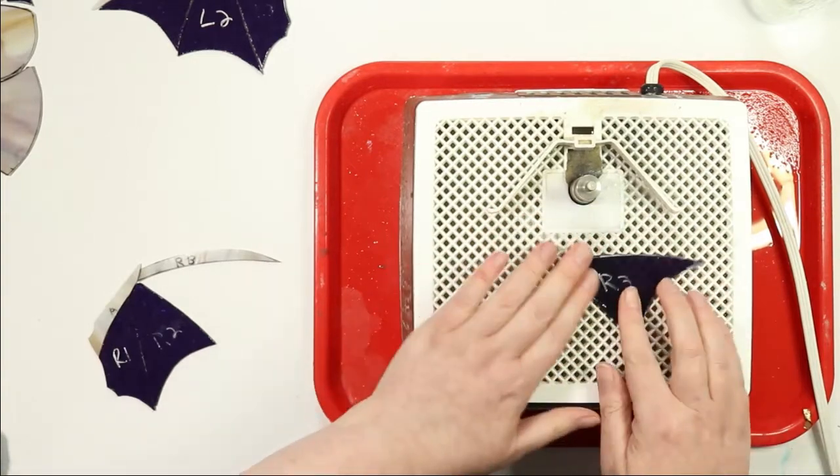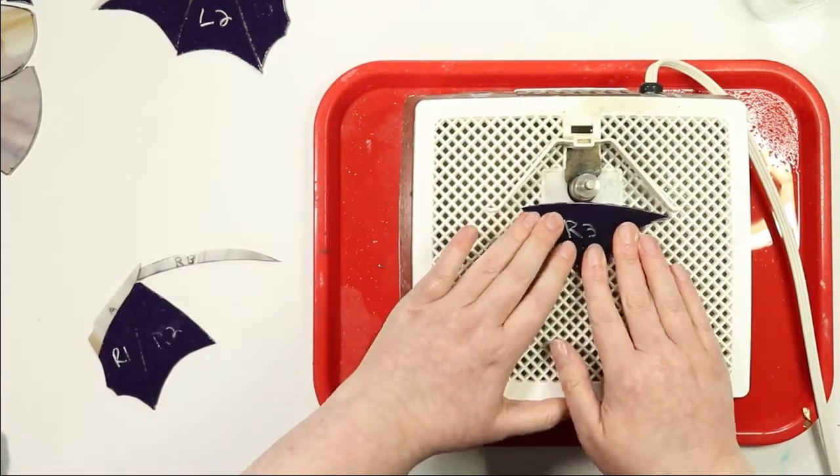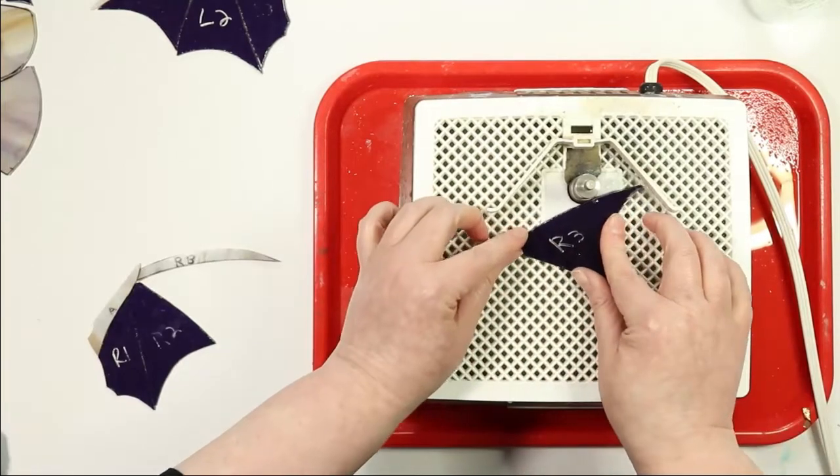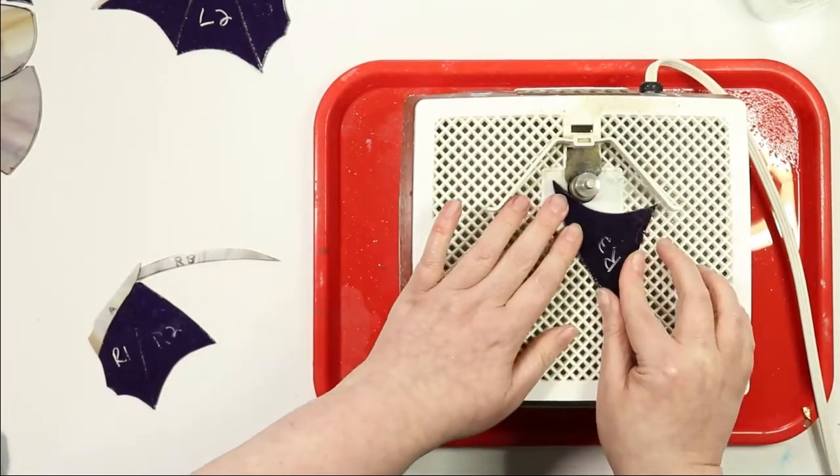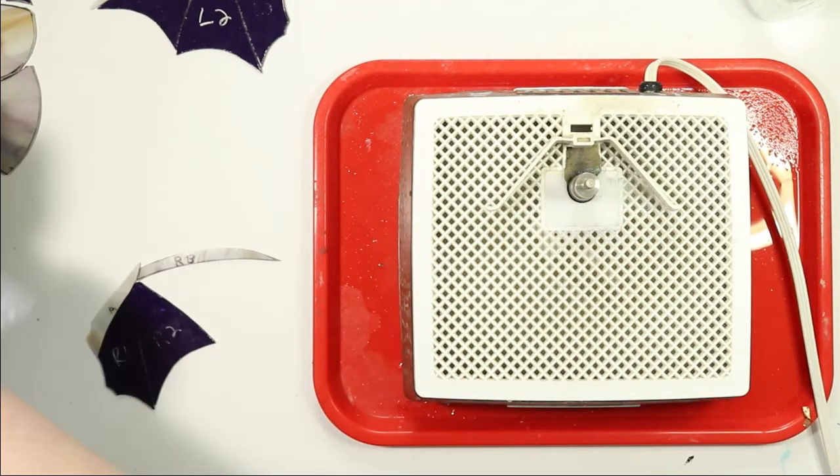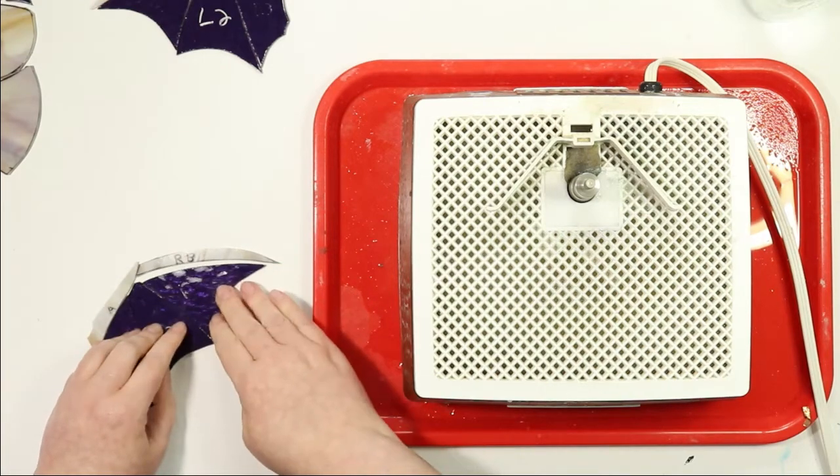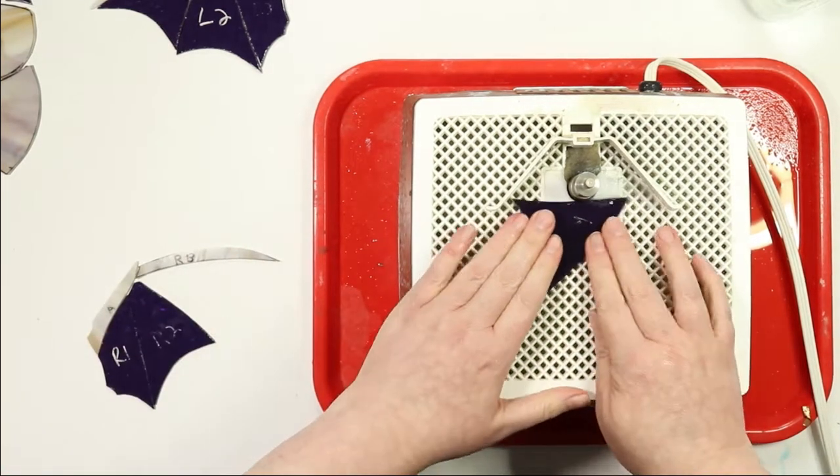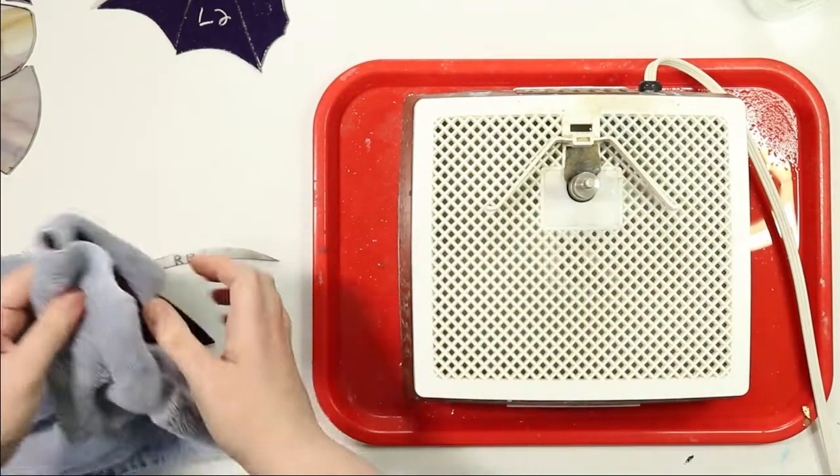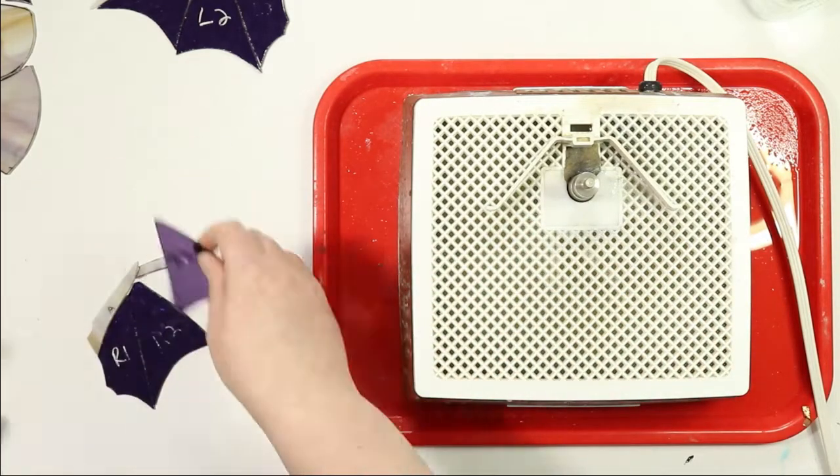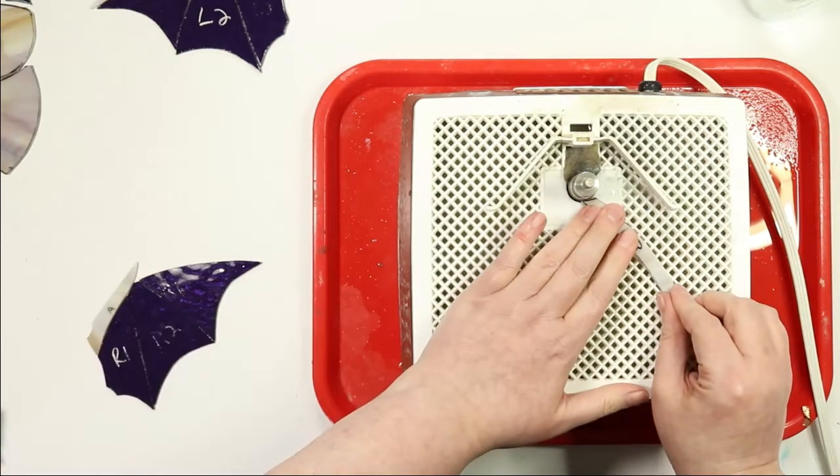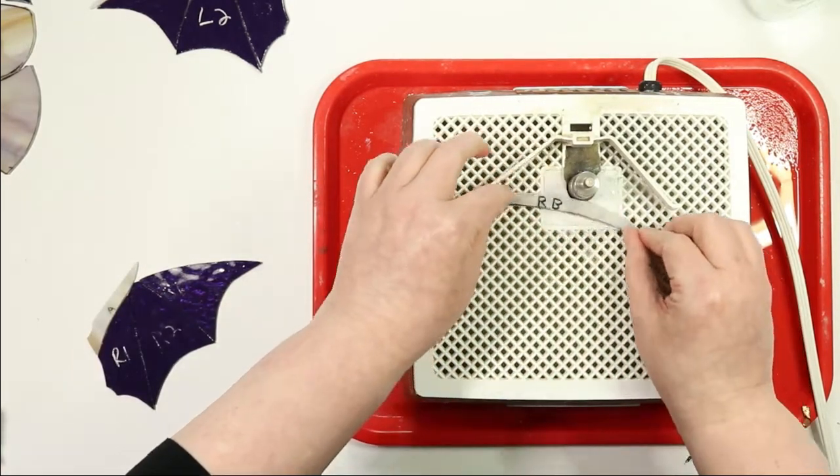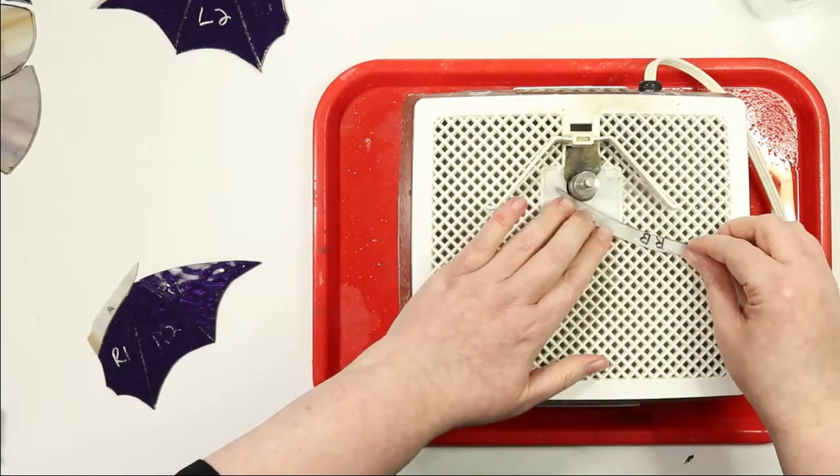So with a design like this suncatcher where it's very easy to compartmentalize the parts of the project, for example with this piece you have a left wing, a right wing, and then you have the body and head of the bat. So it's very easy to work in segments and then make sure that those segments fit together properly after. That's why you can see that I'm just doing one wing at a time.